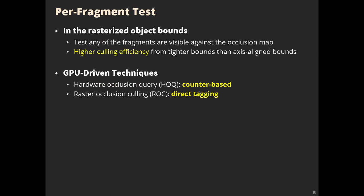As an alternative, there is a method which tests the visibility in the rasterized object bounds. It tests whether any of the fragments are visible against the occlusion map. There are two major GPU-driven techniques: Hardware Occlusion Culling and Raster Occlusion Culling.